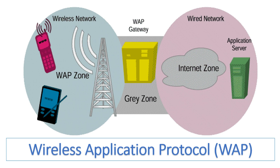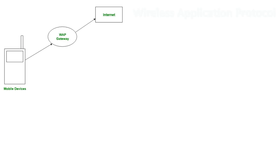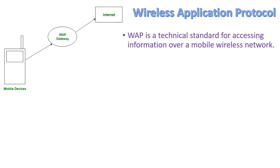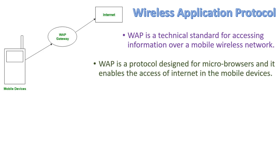WAP stands for Wireless Application Protocol. Whenever we want to access the internet on a mobile device, we use WAP. WAP is a technical standard for accessing information over a mobile wireless network.